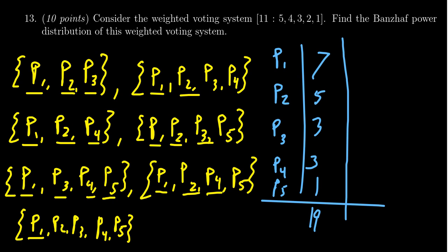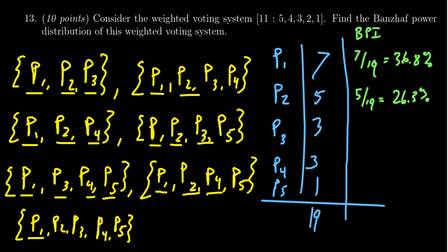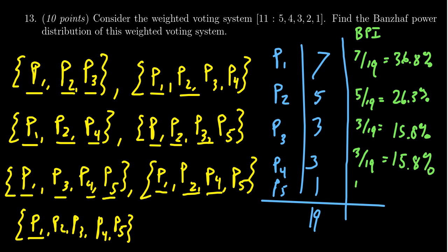Putting this all together, the Banzhaf power distribution — the BPI index — is: player 1 gets 7 over 19, which is 36.8%; player 2 gets 5 over 19, which is 26.3%; player 3 gets 3 over 19, which is 15.8%; player 4 also gets 3 over 19, so that's also 15.8%; and finally player 5 gets 1 over 19, which is 5.3%. That gives us the Banzhaf power distribution for this weighted voting system.